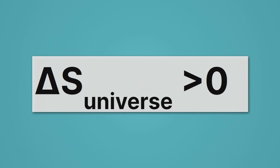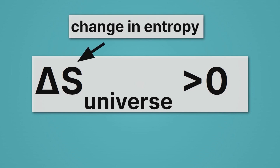And S, believe it or not, stands for entropy. I know that's a little strange, but S is the variable we use for entropy. That's because E is already taken for energy, so we have to come up with something else. So delta S of the universe is greater than zero — that means the entropy of the universe is increasing, is always positive.